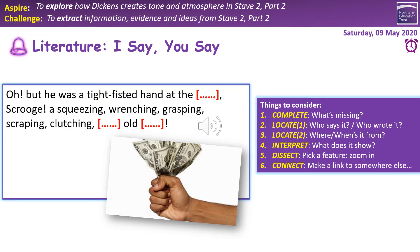The missing words: 'He was a tight-fisted hand at the grindstone, Scrooge. A squeezing, wrenching, grasping, scraping, clutching, covetous old sinner.' Who says it? It's from the narration, right at the start of Stave one, by Dickens as narrator. What does it show? Scrooge's self-centred negativity, his negative impact on others, and his obsession with ownership and control — particularly of money. A feature to zoom in on: the string of verbs — squeezing, wrenching, grasping, scraping, clutching — and the semantic field of religion with 'covetous old sinner,' suggesting his obsession with money is irreligious and immoral. A link elsewhere: we shift from this closed hand to the generosity in Stave 5 when he wakes up desperate to give out his money — a neat contrast.